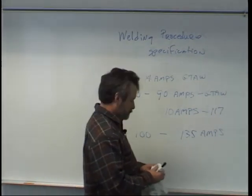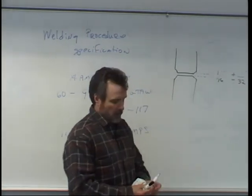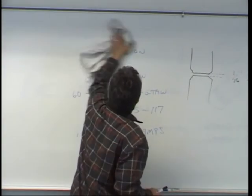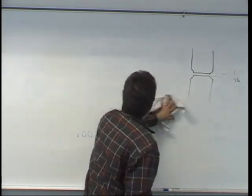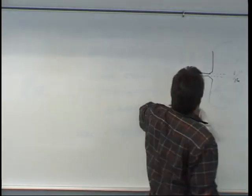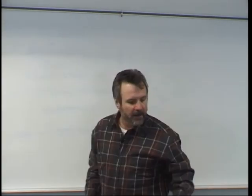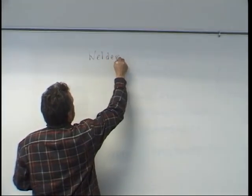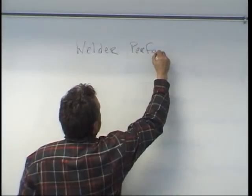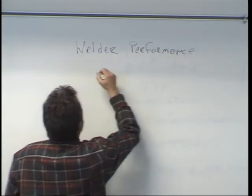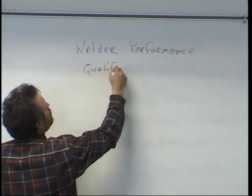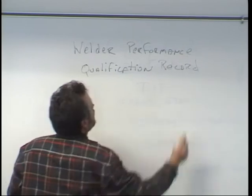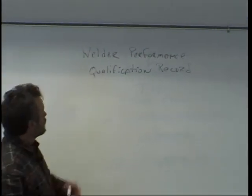So now we've got our PQR, the procedure qualification record, and we have established our welding procedure specification. The next step is we still need qualified welders. This brings us to our third and final document: the Welder Performance Qualification Record, abbreviated WPQR.